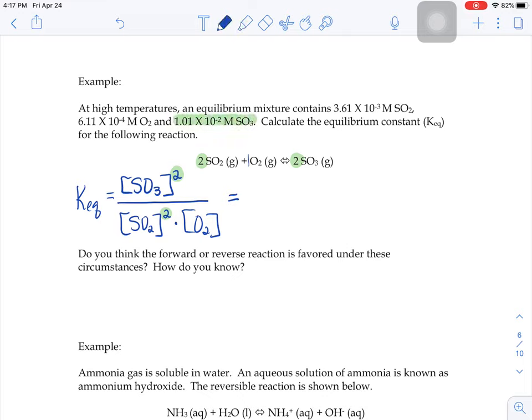The molarity of our SO3 is 1.01 times 10 to the negative 2, we would have to square that, over our SO2 concentration which is 3.61 times 10 to the negative 3rd, also squared, times our oxygen concentration, 6.11 times 10 to the negative 4th.